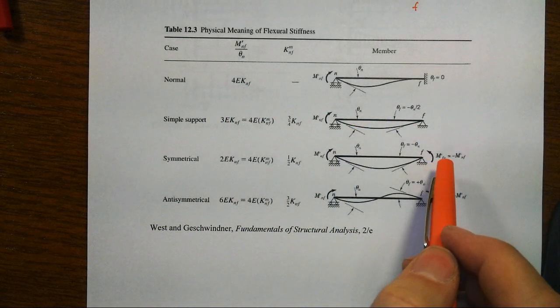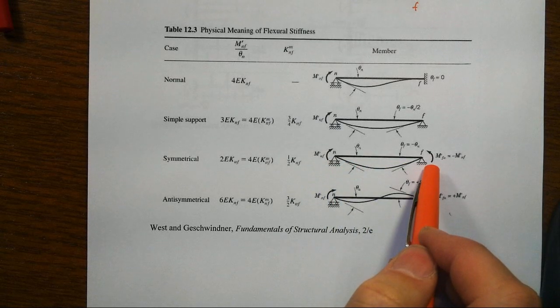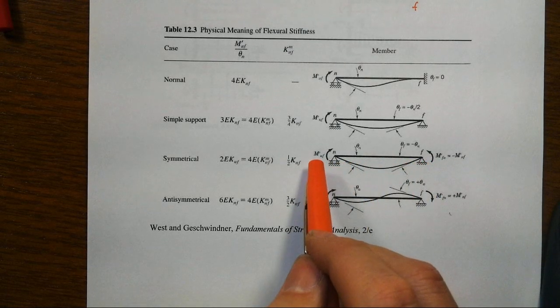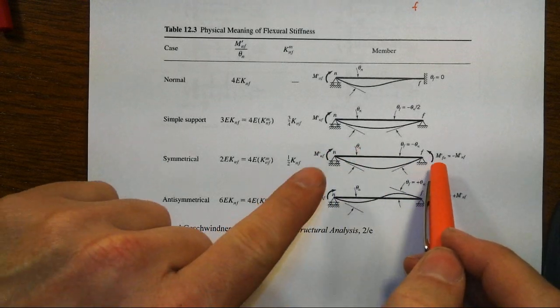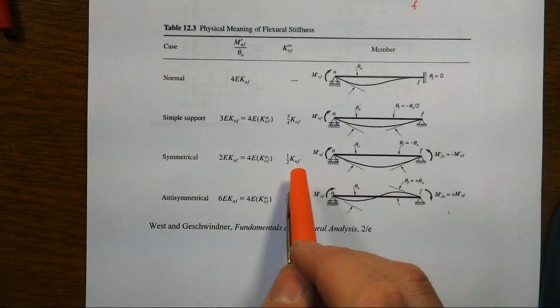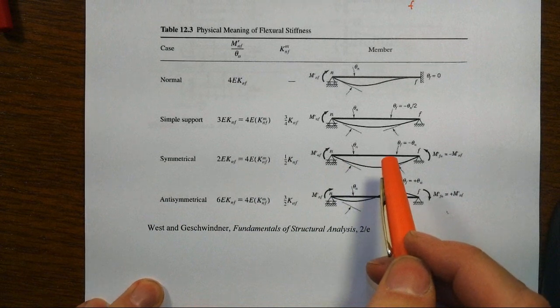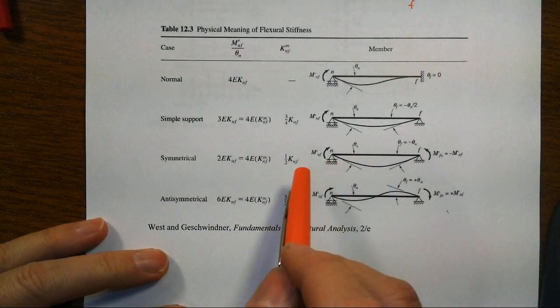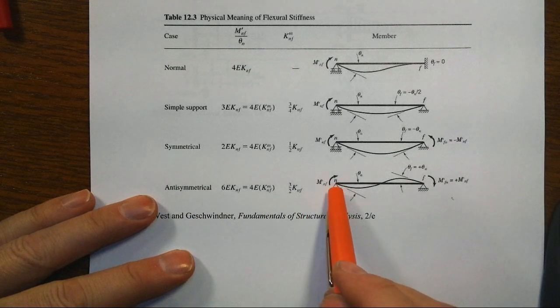If, on the other hand, we have an equal and opposite moment at either end, and now we ask the question how much moment does it take us to get one unit rotation, we're going to increase both of them simultaneously now, equal opposite. Then that's half as stiff, it's a lot easier to get that unit rotation. So that's the symmetrical situation.